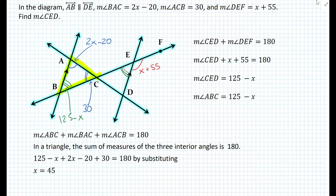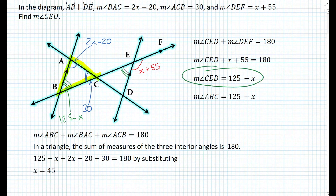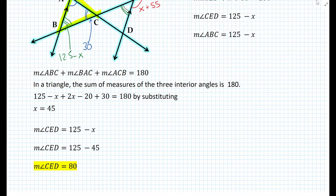The question is asking us to find the measure of angle CED. All we need to do is substitute into the expression — the measure of angle CED is 125 minus x. Substituting 45 for x, we obtain a measure of angle CED equal to 80 degrees. And that is the answer.